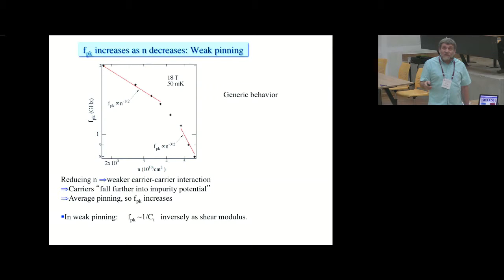So why does it do this? FP increases as N decreases. So that means as the shear modulus, which of course increases with density for a Wigner crystal, increases, the frequency decreases. So it's stiffer crystal, lower frequency. The reason for that is that the closer the carriers are holding to their crystalline positions, the further they are from features in the impurity potential, so that when the crystal is displaced, it costs it less energy. So basically, the carriers fall deeper into the impurity potential when the crystal is softer, when the density is less.